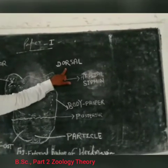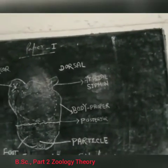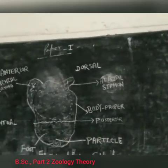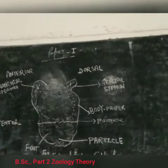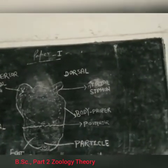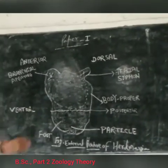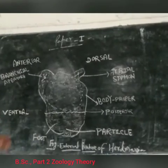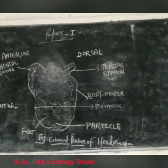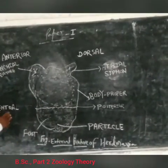This is the dorsal atrial aperture. The opposite sides are the posterior and ventral ends.